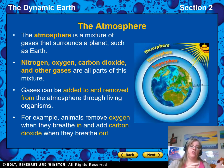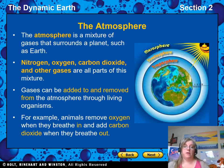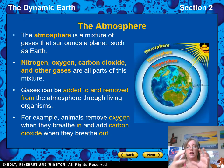The gases can be added to and removed from the atmosphere by the action of living organisms. Plants, animals, and other microorganisms can add to and remove things from the atmosphere. For example, animals remove oxygen when they breathe in and add carbon dioxide when they breathe out. So the atmosphere isn't static — it's changing all the time based on the actions of the organisms that live there.